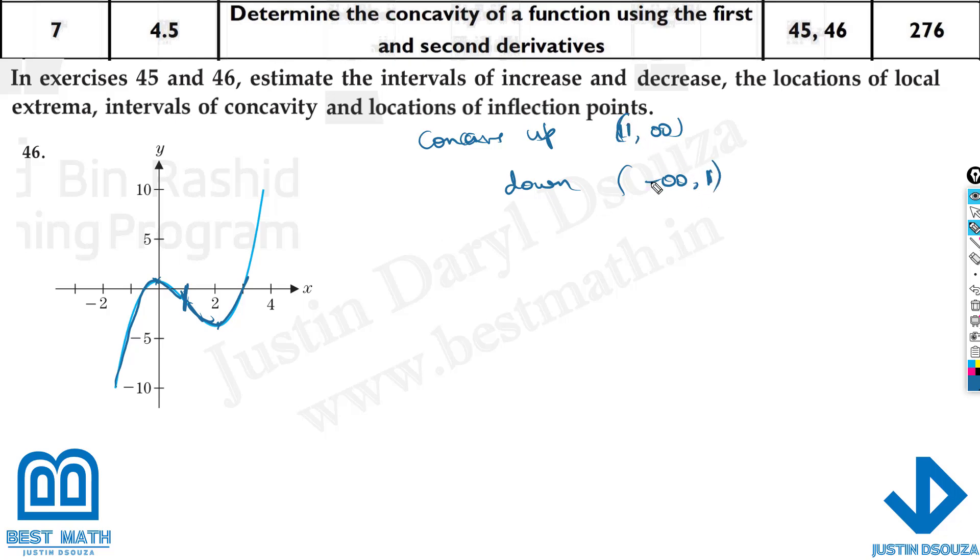So 1 to infinity would be upwards. Downwards would be minus infinity to 1. Inflection point would be somewhere at 1 because we have already mentioned it.